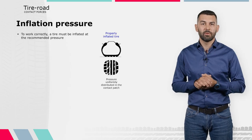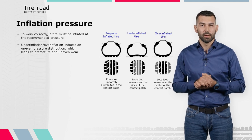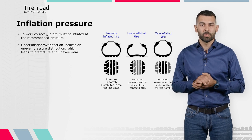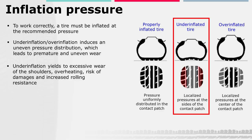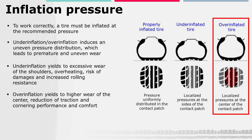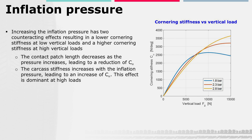To work properly, a tire must be inflated at the recommended pressure. Under-inflation or over-inflation induces an uneven pressure distribution, which leads to premature and uneven wear. Under-inflation yields excessive wear on the shoulder, risk of damage, and increased rolling resistance. Over-inflation leads to excessive wear of the center, and reduces traction, cornering performance, and comfort. Increasing the inflation pressure has two counteracting effects on the cornering stiffness: first, the contact patch length decreases, leading to a reduction of Cα; second, the carcass stiffness increases, leading to an increase of Cα. This latter effect is dominant at high loads, resulting in lower cornering stiffness at low vertical loads and higher cornering stiffness at high vertical loads when pressure increases.